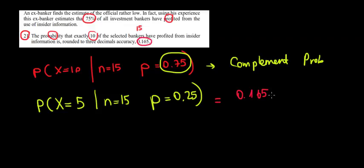So 16.5% is the probability that exactly 10 out of 15 bankers profited from insider information, given that we assume 75% of investment bankers profit from insider information. That's the most detailed conclusion we can give, and the answer is true.